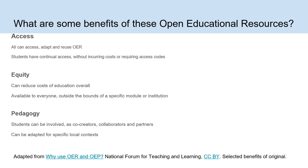So what are some of the benefits of open educational resources? There are many benefits, and these are just a few from a resource called 'Why Use OER and OEP' from Ireland's National Forum for Teaching and Learning. The first benefit is access: all can access, adapt, and reuse OER, and students have continual access without incurring costs or requiring access codes — there's no cost barrier.